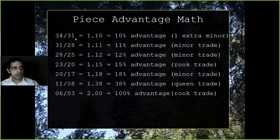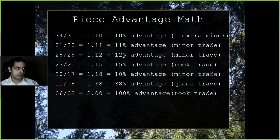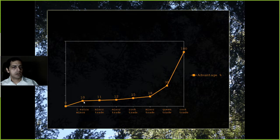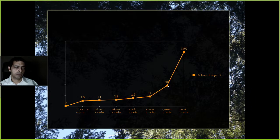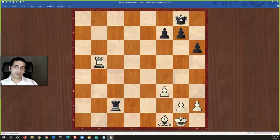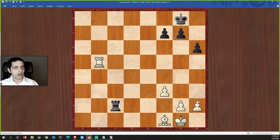Using this calculation: black is 3 points behind having lost a minor piece, so I have 34 to 31 — about a 10% advantage. Trade a minor piece: 11%. Trade another minor piece: 12%. Trade a rook: jumps to 15%. Trade another minor piece: 18%. Trade the queen: jumps from 18% to 38%. So as long as the queen was on the board my advantage was decent but not great. Once I traded queens, my advantage shot up enormously. If I can then trade his rook too, it's a 100% advantage.